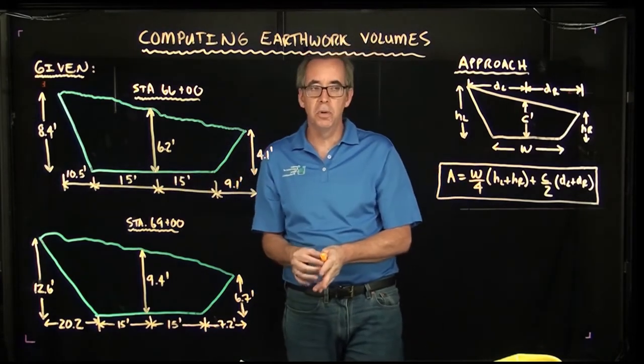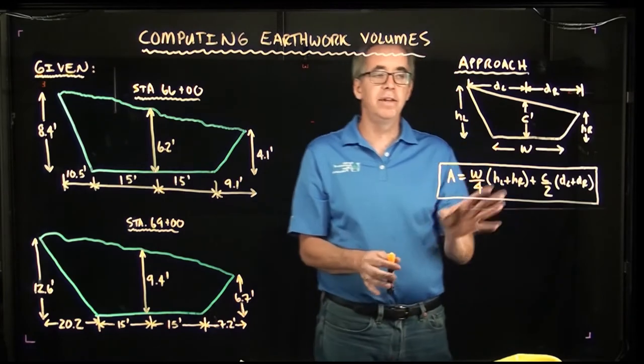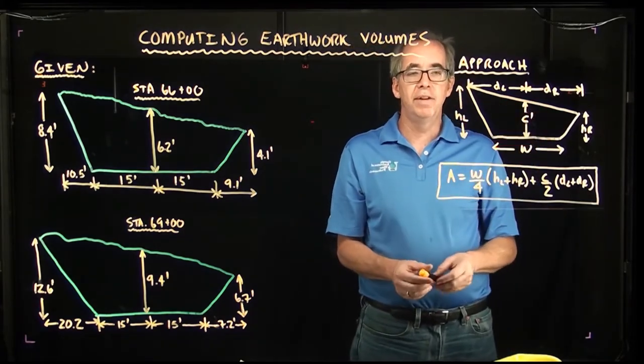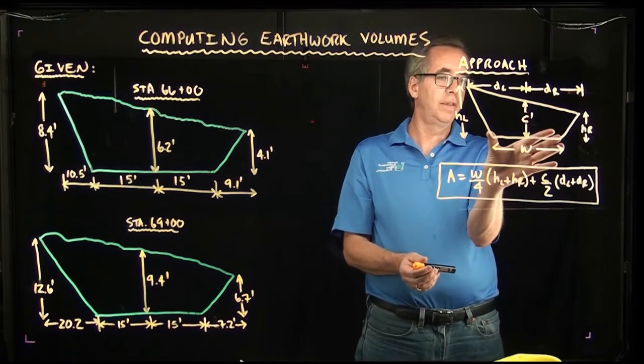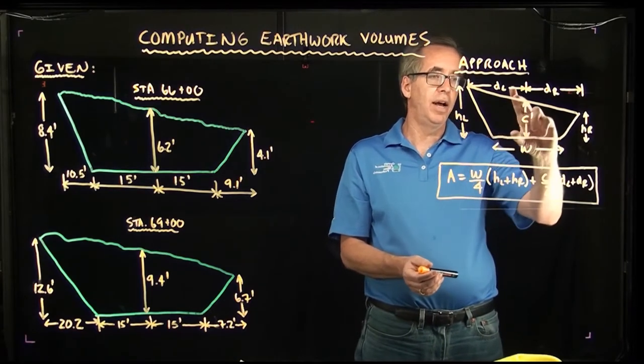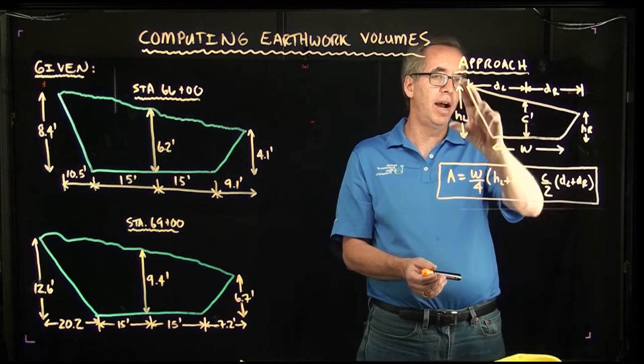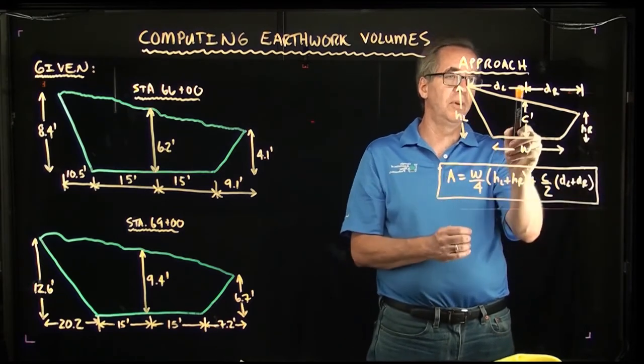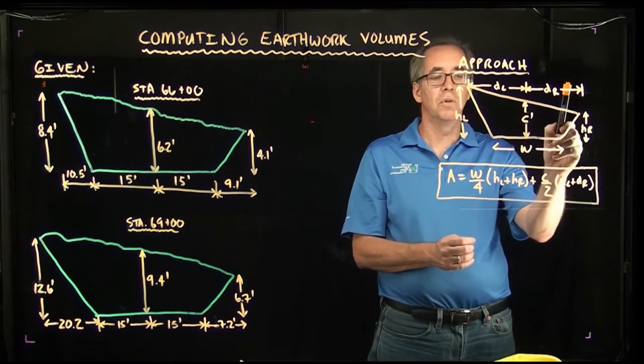Now the approach that we're going to use is an equation that's in the textbook. This is a very common equation for trapezoid where if you have the width of the section and the height of the center line, height on the left, height on the right, distance from the center to the left and distance to the right.